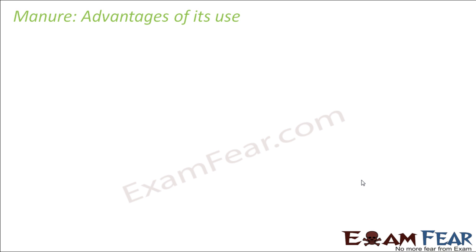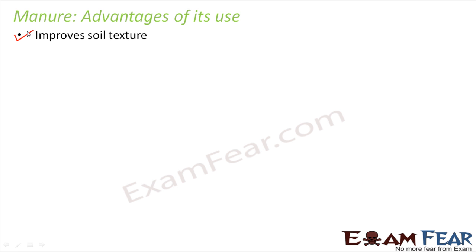Let us look at some advantages of using manure. Manure is prepared using dead and decaying remains of plants and animals and is rich in nutrients and organic matter. It improves the soil texture by providing additional nutrients, increasing soil quality. It also restores soil nutrients — for example, nutrients used up by previous crops can be replenished by adding manure externally to compensate for the loss.